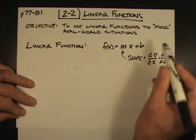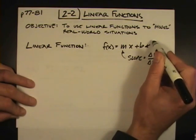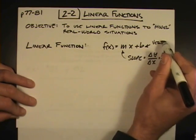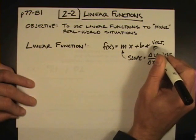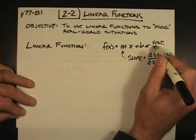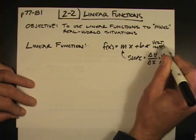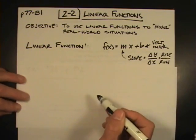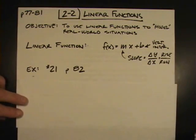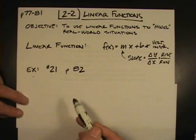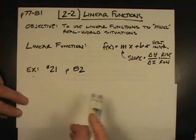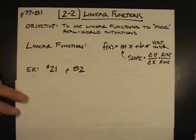And then our b is, of course, our vertical intercept and where that line crosses the y-axis. So, vertical intercept. We're going to look at example 21 on page 82 and we'll solve that in a minute.